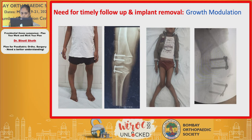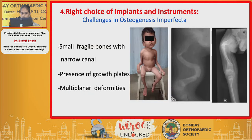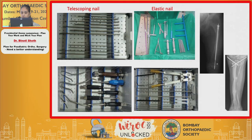Pediatric patients present challenging problems — for example, osteogenesis imperfecta with fragile bones, narrow canals, presence of rods in place, and multiplanar deformities. Remember, pediatric patients are not just adults in small size. We need a full armamentarium of instrumentation and implants to make them straight.